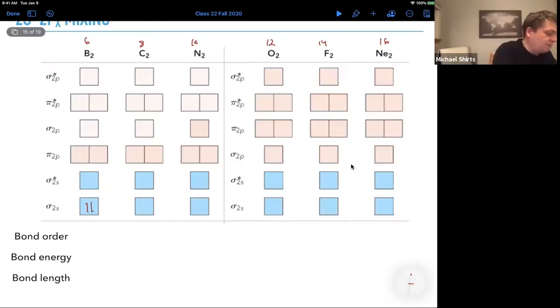So, Hund's rule still applies. One, two, three, four, five, six. Okay, so we're filling those degenerate. So, B2 is going to be paramagnetic because it has two unpaired spins. If the energy levels were reversed, it wouldn't be.